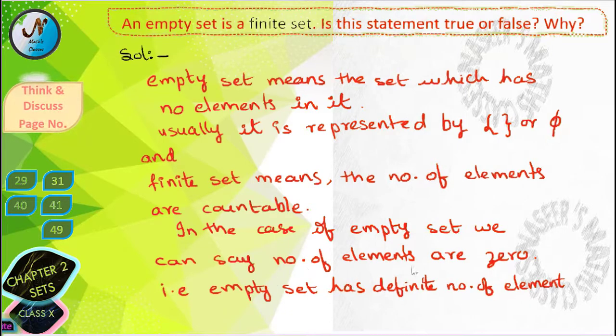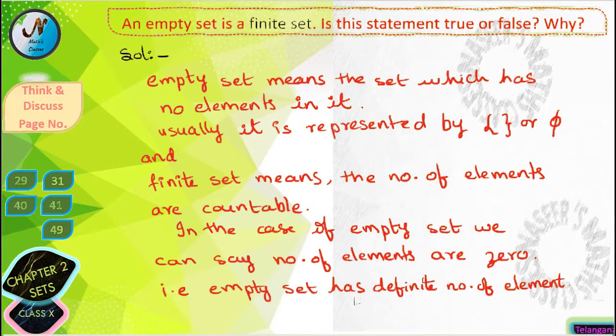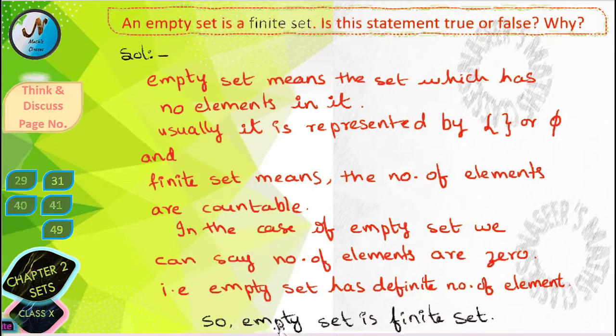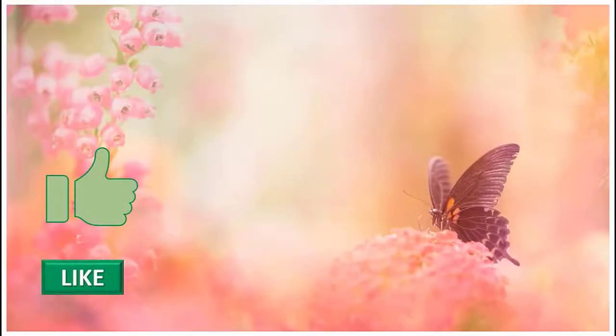In the case of empty set, we can say that number of elements are zero. That is, empty set has definite number of elements, means the set has zero number of elements. That's why empty set is a finite set.